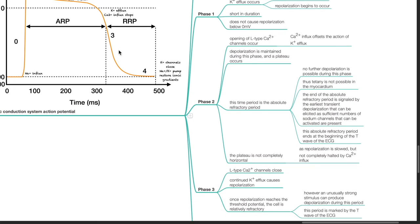During phase 3, L-type calcium channels close. Continued potassium efflux causes repolarization. Once repolarization reaches the threshold potential, the cell is relatively refractory. However, an unusually strong stimulus can produce depolarization during this period. This period is marked by the T wave of the ECG.